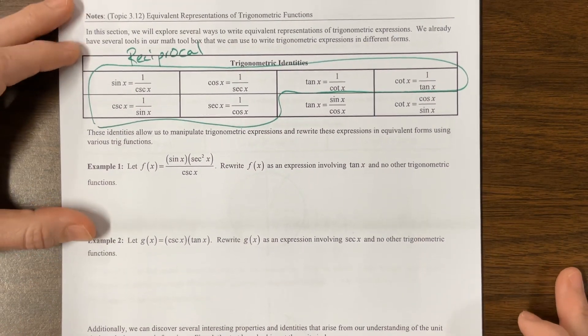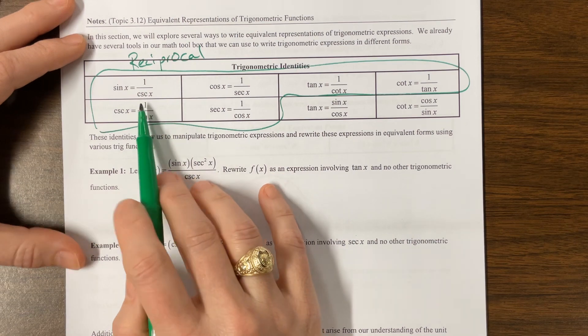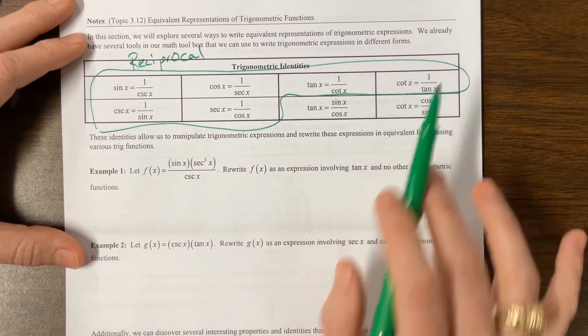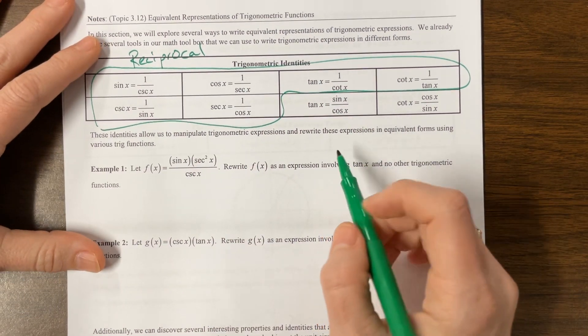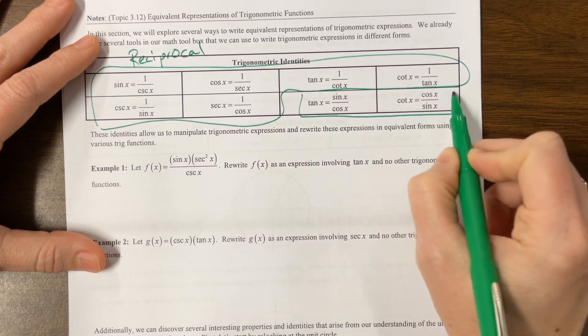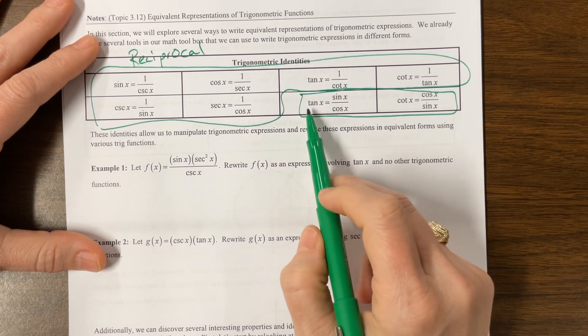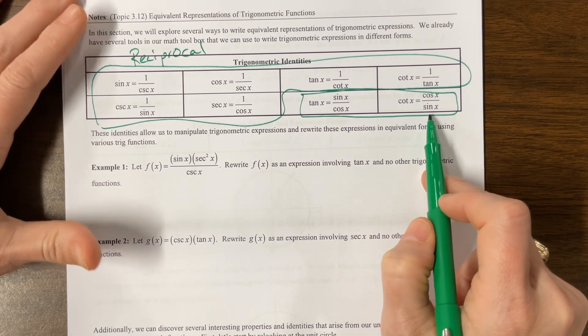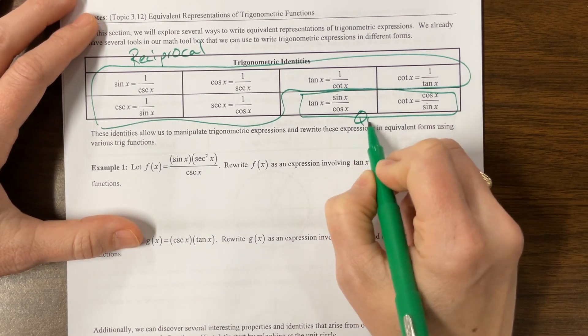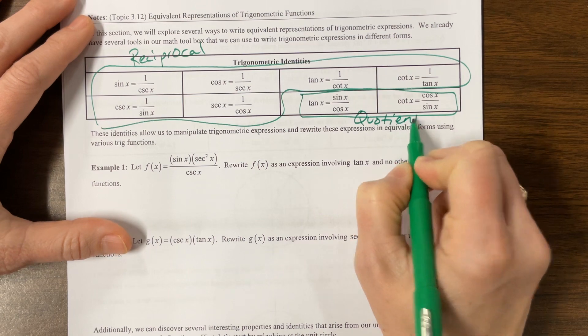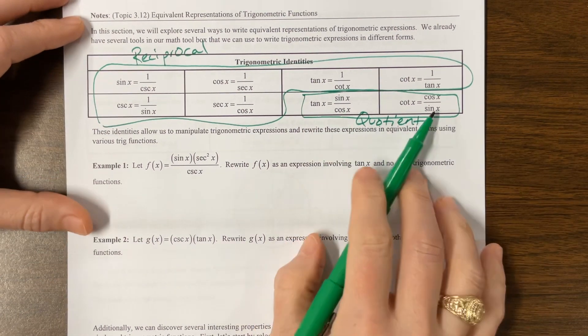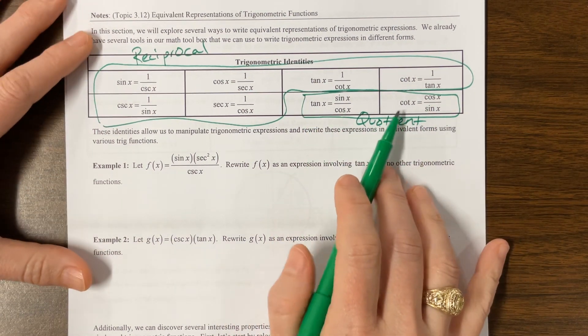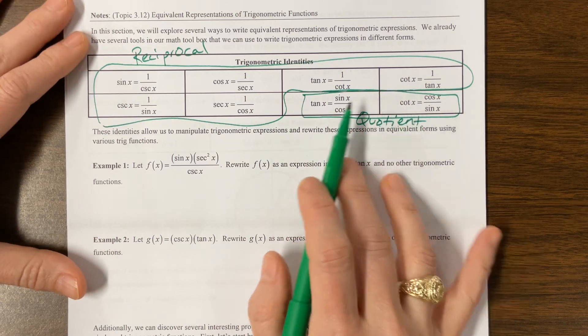If this is brand new to you, go back and watch some of my older videos. But basically each pair has one 'co' is one way to remember who pairs up. Tangent is equal to sine over cosine and cotangent is cosine over sine. These are the quotient identities because we can write one as a quotient of the other. By this point in the course, I think this should be old hat to you. I think you should know this really well.